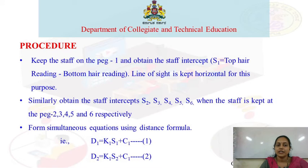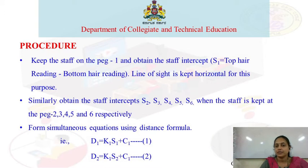Staff intercept is calculated as top hair reading minus bottom hair reading. The line of sight should be horizontal when taking staff readings.